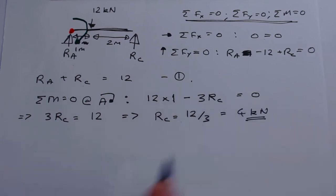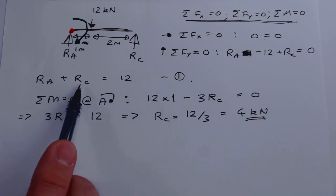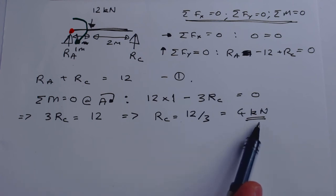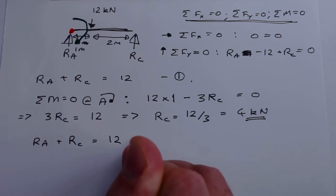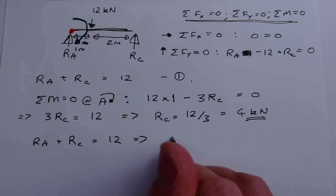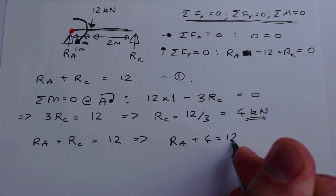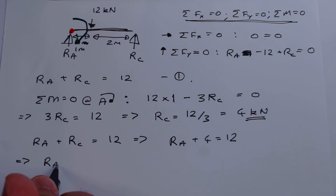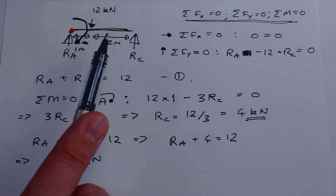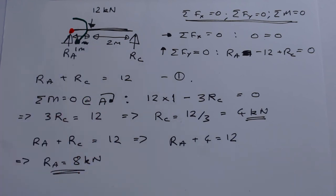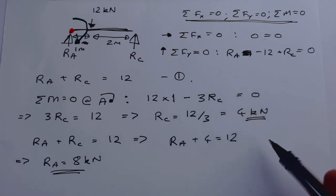Simplifying: RC equals 12 divided by 3, which equals 4 kilonewtons. Going back to equation one, RA plus RC equals 12; substituting RC equals 4 gives RA plus 4 equals 12, so RA equals 8 kilonewtons. Does this make sense? The load is closer to the left, so the left reaction being larger seems correct.